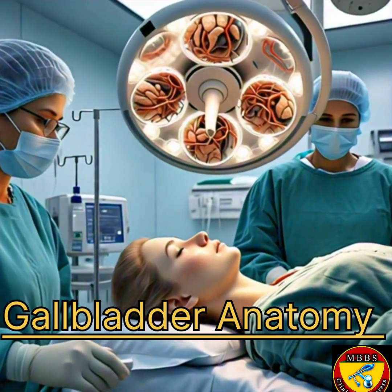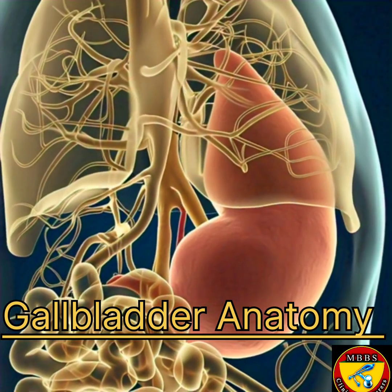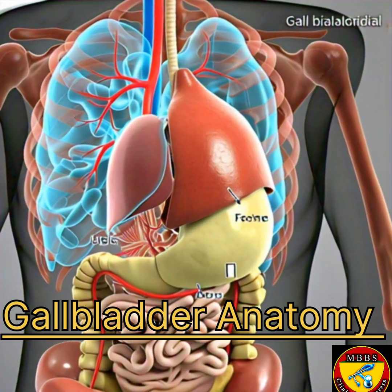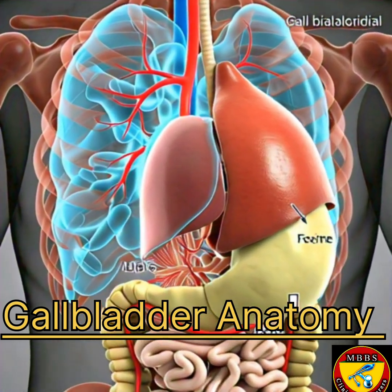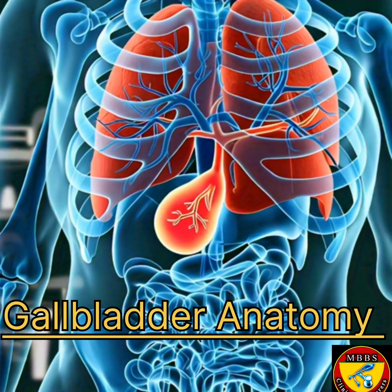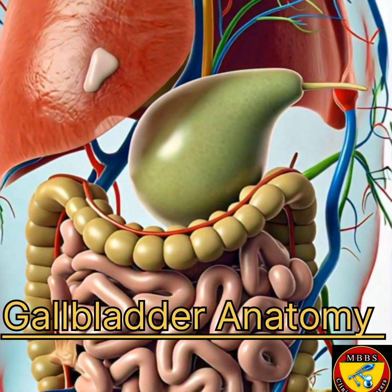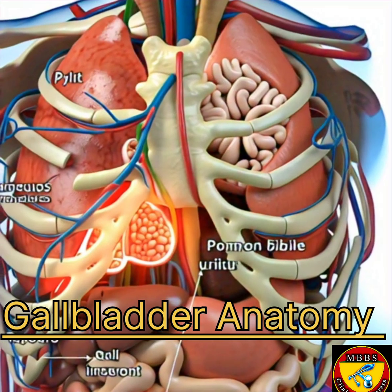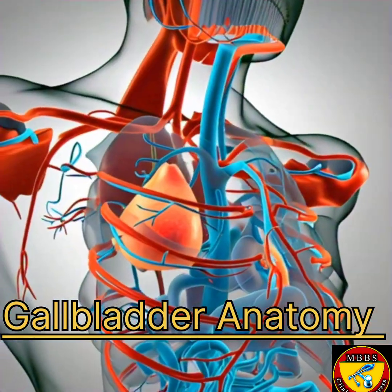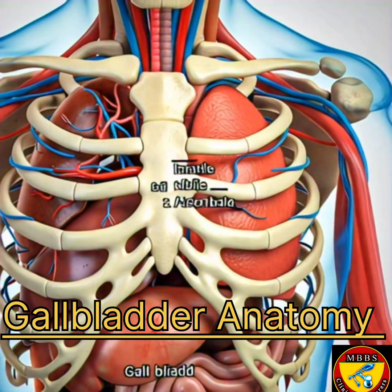The gallbladder wall consists of three layers: the mucosa, the innermost layer lined with epithelial cells that secrete mucus — the mucosa is highly folded, forming Rokitansky-Aschoff sinuses; the muscularis, the middle layer composed of smooth muscle cells that contract to expel bile; and the serosa, the outermost layer, a thin layer of connective tissue that covers the gallbladder.